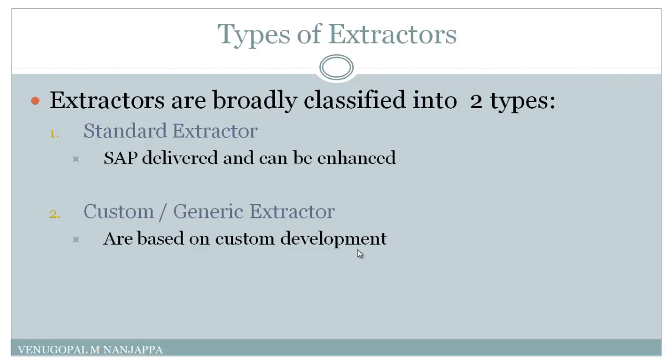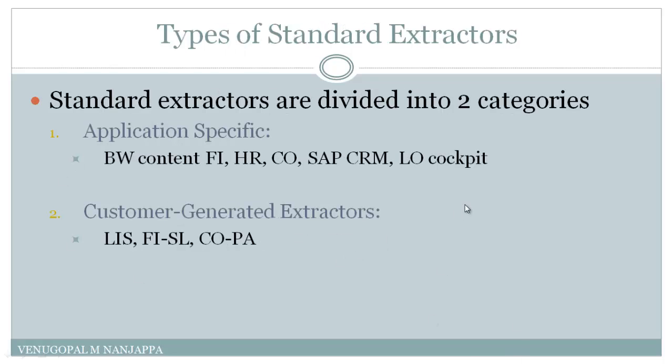Standard extractors are divided into two categories: one is application-specific, and the second is custom or generated extractor. Application-specific extractors have subtypes like BW content, FI, HR, CO, SAP CRM, and LO cockpit. Whereas custom or customer-generated extractors are subdivided into LIS extractors, FI-SL extractor, and COPA extractors.